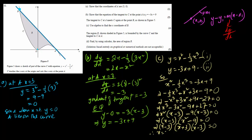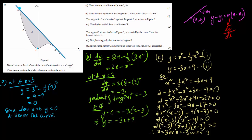This gives x equals 3 (twice) or x equals minus 3. Since x equals 3 corresponds to point A, the x-coordinate of point B — the other intersection of the tangent with the curve — is minus 3.